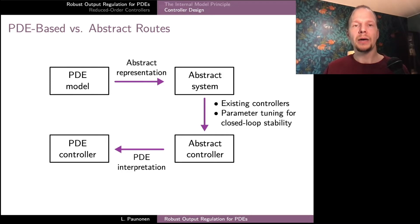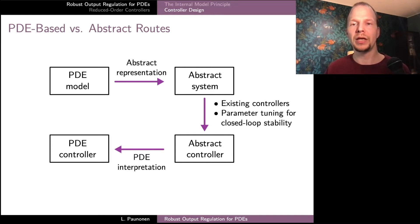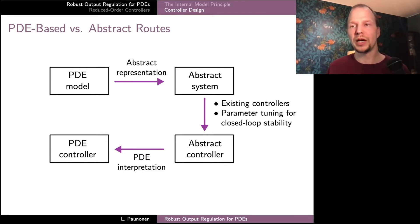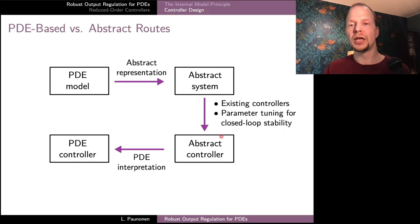In the abstract route, we begin with our original PDE and first find a representation in a suitable class of abstract systems. Once we have this abstract representation, we ideally have access to a large number of different controller designs applicable to this class of models. These results typically come with a general structure for the controller along with instructions on how to choose the controller parameters. Starting from PDE models, choosing these parameters correctly can typically be converted into PDE stabilization problems.